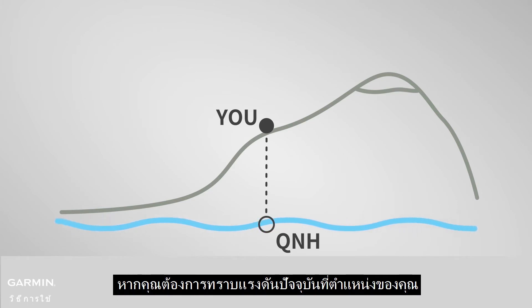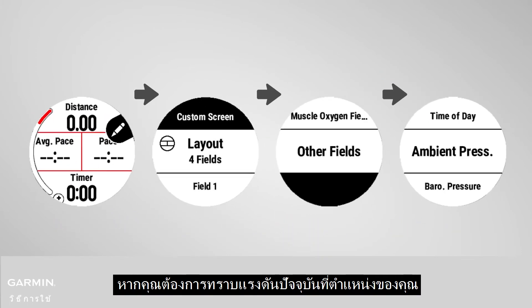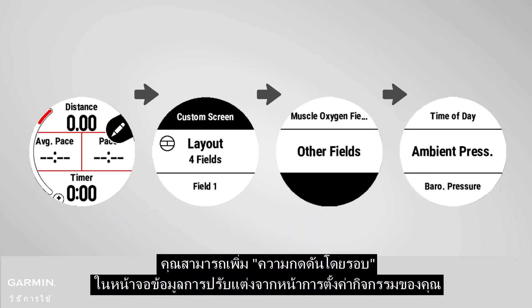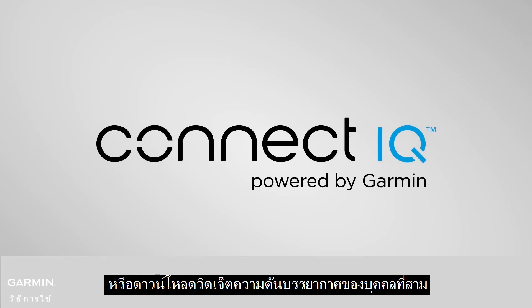If you need to know the current pressure at your location, you can add ambient pressure in the customizing data screen from your activity setting page, or download a third-party barometric pressure widget.